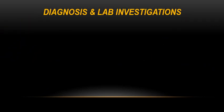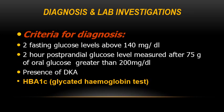Regarding diagnosis and lab investigations, in addition to clinical signs and symptoms, we need confirmation by further lab investigations. If the patient has two fasting glucose levels rising above 140 mg per deciliter, it is considered diabetic. Also, two-hour postprandial glucose levels greater than 200 mg per deciliter — measured two hours after 75g ingestion of oral glucose — indicate diabetes.